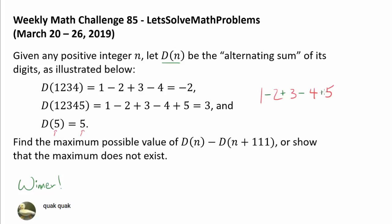The pattern is minus, plus, minus, plus, applied to each digit. Now here is the question: find the maximum possible value of d of n minus d of n plus 111, or show that the maximum does not exist.